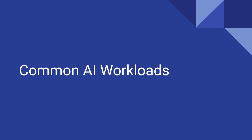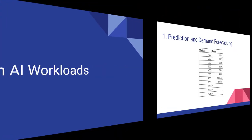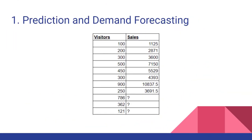What are some common AI workloads, especially when it comes to Azure's capabilities? The first one we'll talk about is prediction and demand forecasting. Here's a table with number of visitors and the amount of sales that came from those visitors. Maybe if you were looking at this, you might be able to infer how many sales would come for an arbitrary number like 786 or 362. It's not entirely obvious if there's a relationship between visitors and sales.